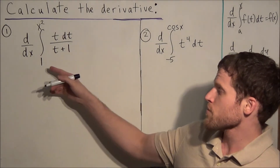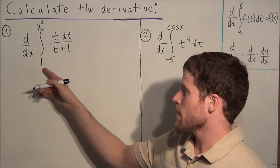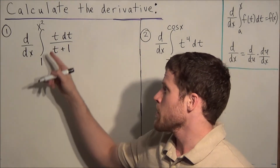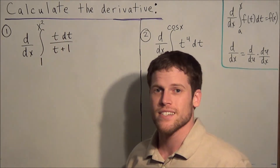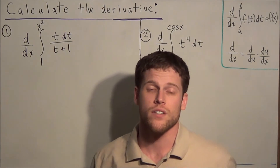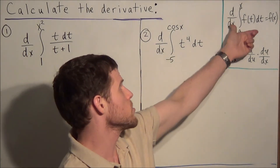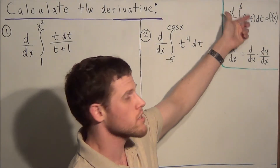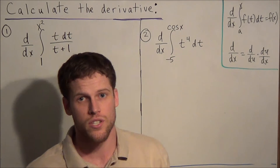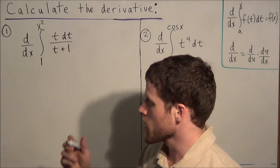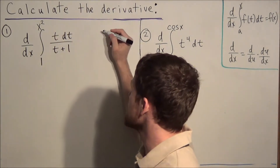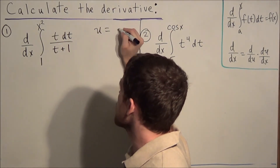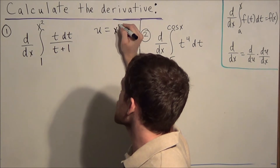For the first question, we have a constant in our lower limit, but our upper limit is not in terms of x. That tells us we cannot use the second fundamental theorem of calculus just yet. So what we're going to do is make a u-substitution — we're going to let u equal x squared.